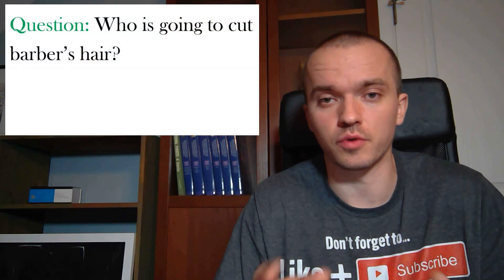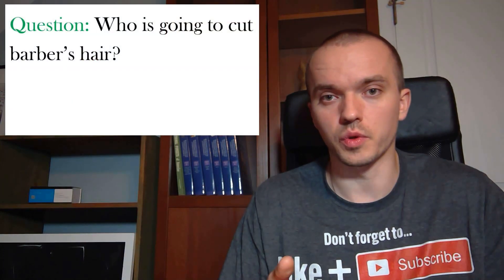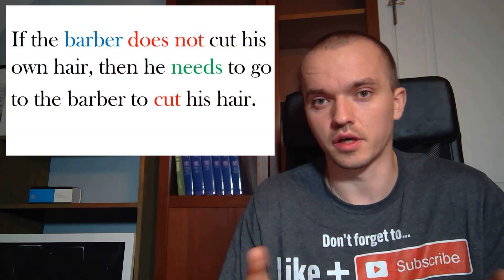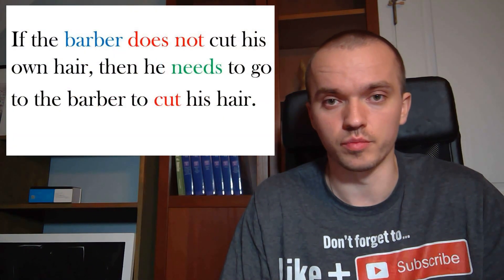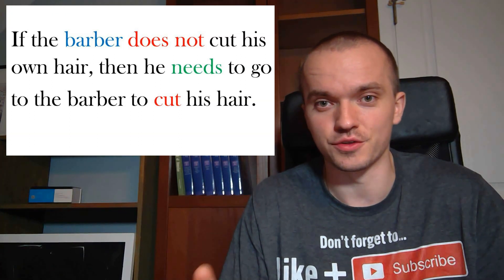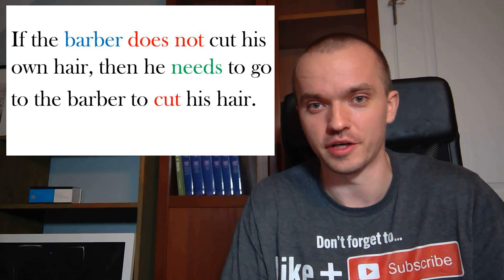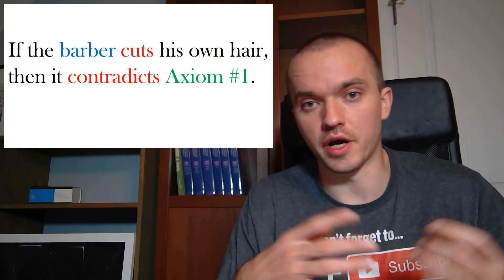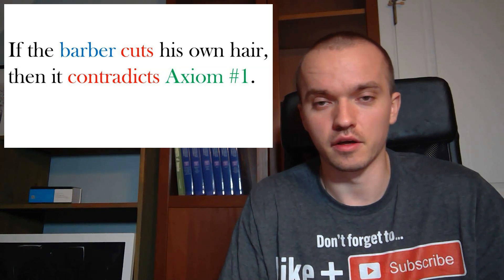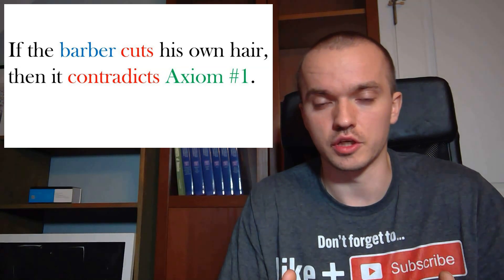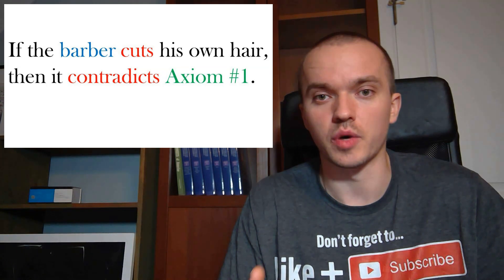That question becomes our proposition: who is going to cut the barber's hair? If we assume the barber doesn't cut his own hair, then by definition he belongs to the subset of villagers, so he needs to go to the barber shop and cut his own hair — but he cannot do that, because we said the barber cuts everyone else's hair except his own. On the other hand, if we assume the barber can cut his own hair, we get a contradiction again, because we have two statements that negate each other. So asking that simple question gives us an unresolvable contradiction within just one axiom.